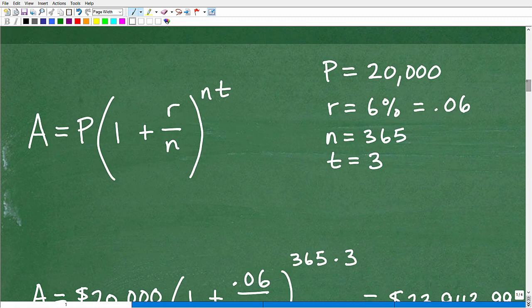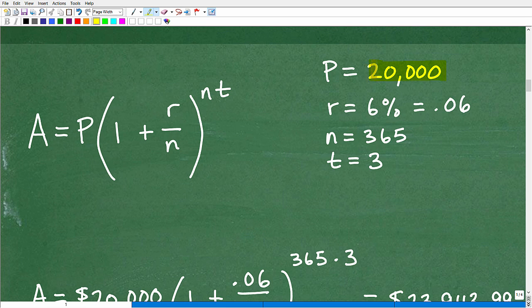Here is our formula. Our principal is 20,000 or $20,000. Our rate is 6%. But when we plug it in to our formula, we can't plug in 6%. This is a common place where students make a mistake. Do not forget that we have to write this as a decimal. So 6% as a decimal, just divide that by 100 or move the decimal point over two places to the left, that's 0.06.